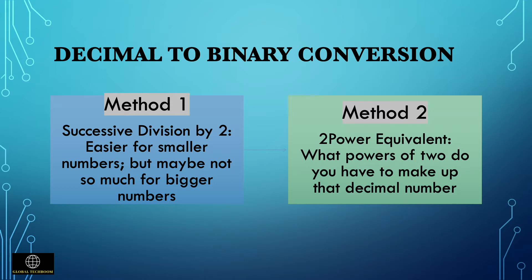Let's see a simple example for converting from decimal to binary. We can convert the number 15: 15 divided by 2 is 7 with remainder 1. Then 7 divided by 2 is 3 with remainder 1. Then 3 divided by 2 is 1 with remainder 1. Then 1 divided by 2 is 0 with remainder 1. This method works well for smaller decimal numbers.